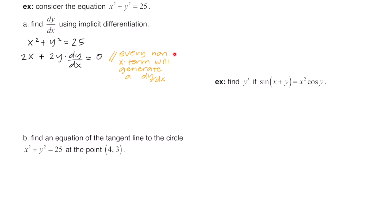Every non-x term will generate a dy/dx. So when we took the derivative implicitly: x squared is an x term, so you just take its derivative. The non-x term y squared — you take its derivative, getting 2y, and then tack on a dy/dx. The constant's derivative is 0. The next step is to isolate the dy/dx. Divide both sides by 2y, and when you simplify, you get negative x over y.